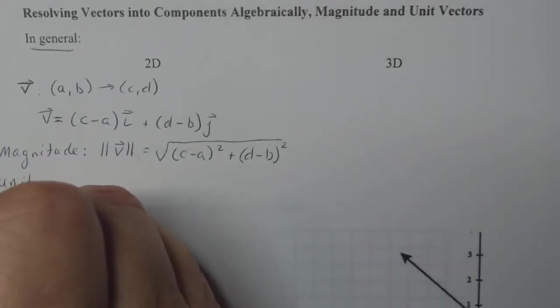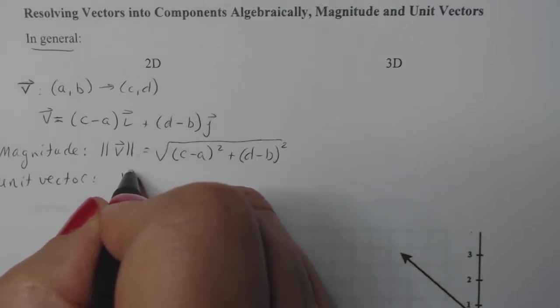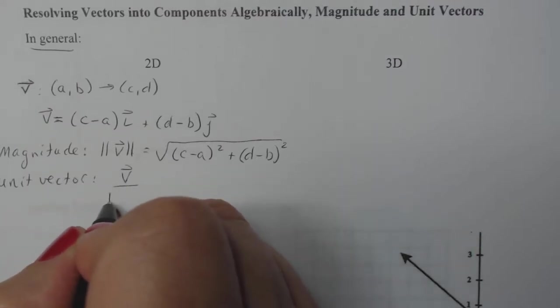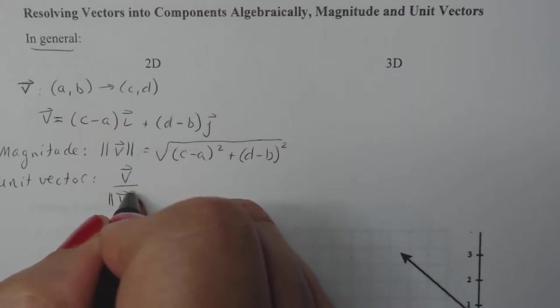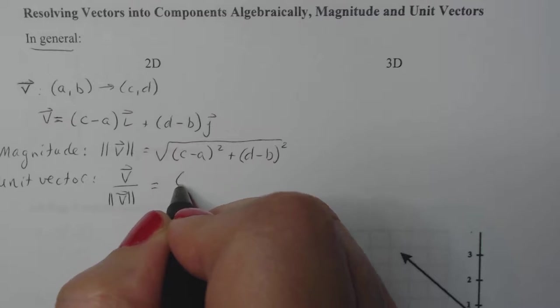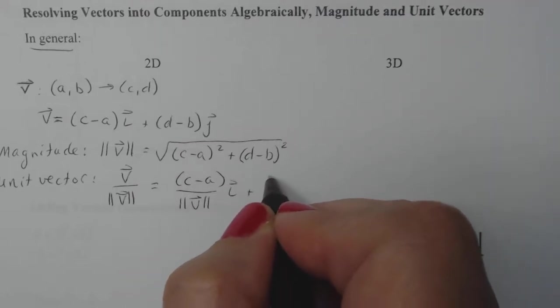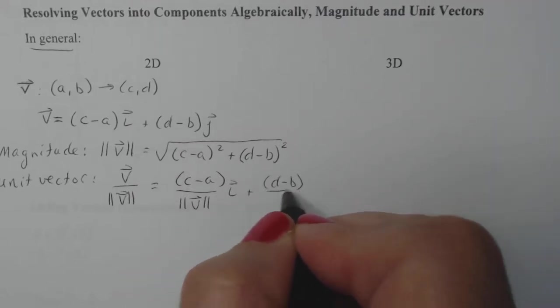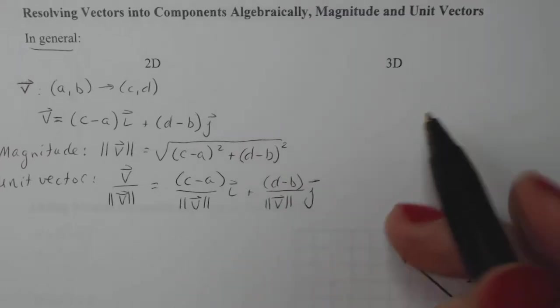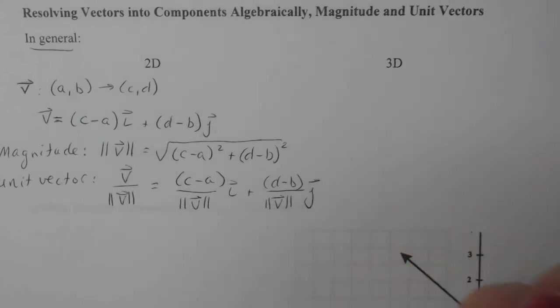If I want to talk about the unit vector, that's basically just taking the components of the vector itself and dividing each of the components by the magnitude, whatever it turns out to be. So this would be equal to (c - a) over the magnitude of V times i plus (d - b) over the magnitude of V times j. And notice every time I use i and j and I write down vector V, I use my arrows.